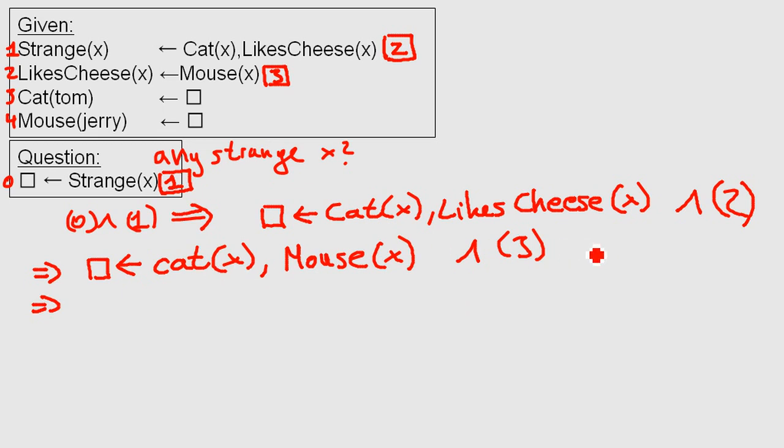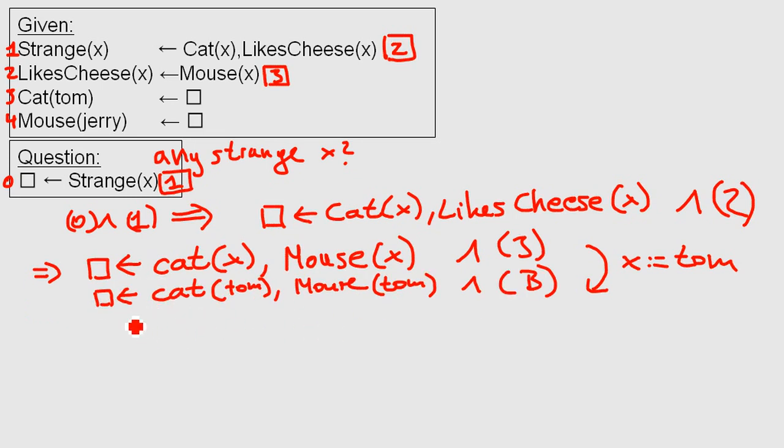So now we try to use the rule number three. And now we have to use the assignment that I wanted to do earlier. We set the X to Tom. We need to do this in order to use rule number three and now we have... I won't write it down. I will write it down. Let's remove this one.